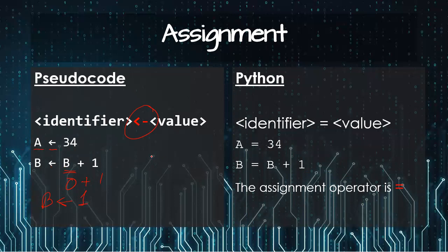If B is 1, so when you are doing this 1 plus 1, the value will change to 2. It's a variable. And in Python as well, only the arrow sign is replaced with an equal sign. The assignment operator is equal.